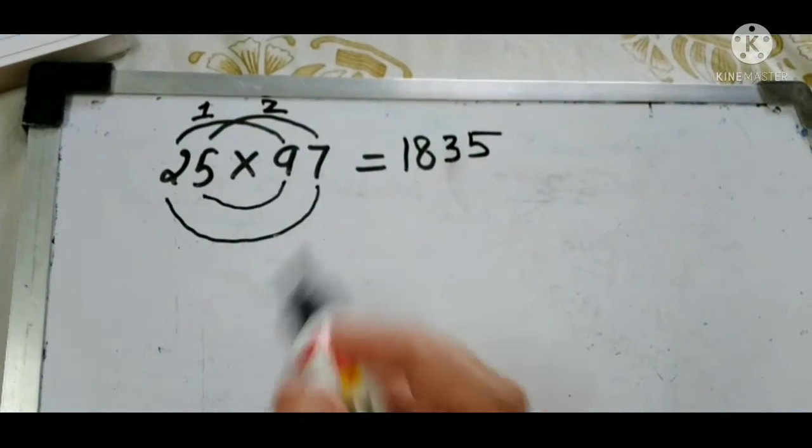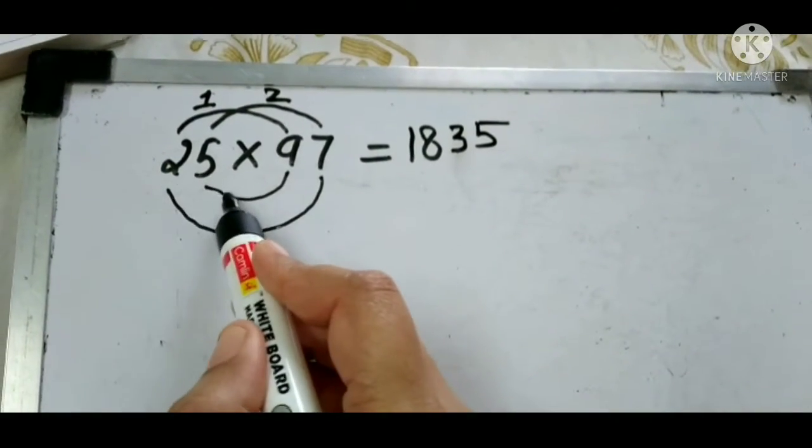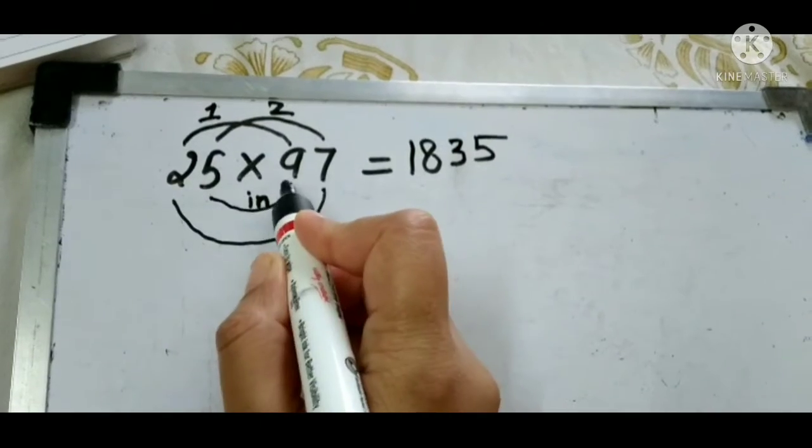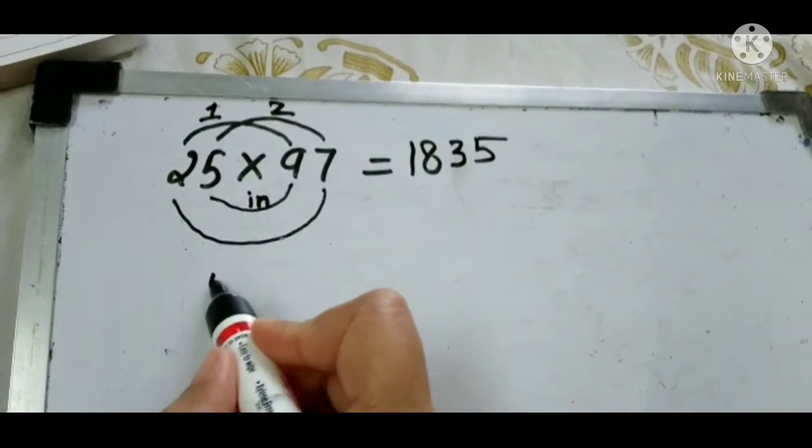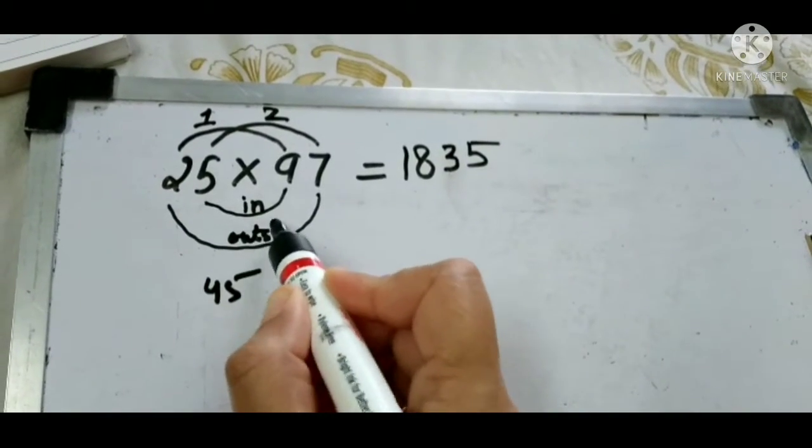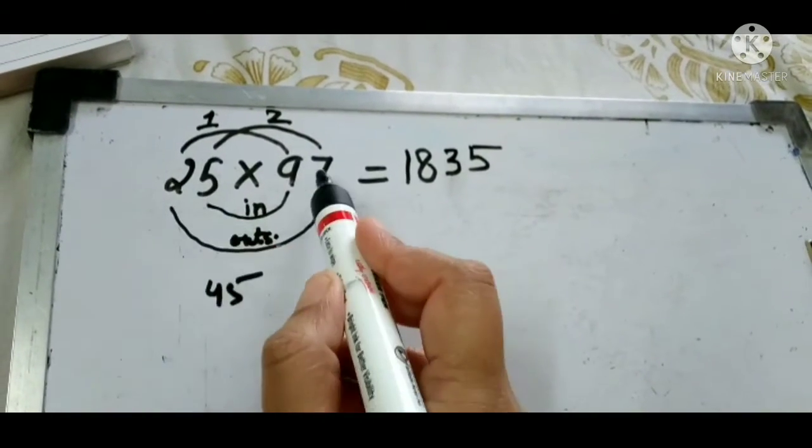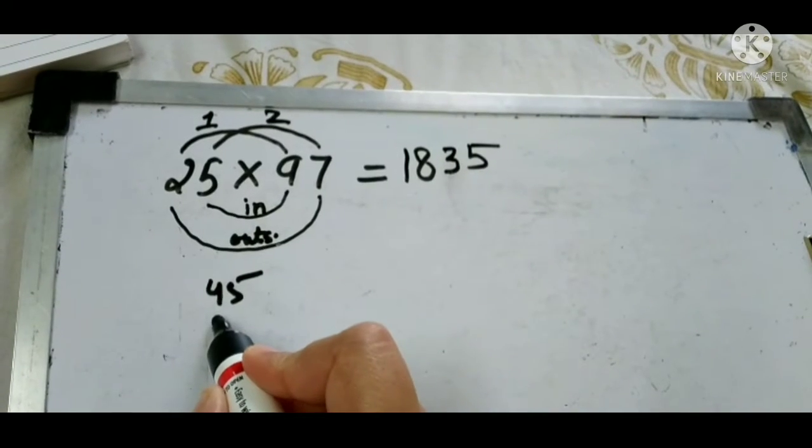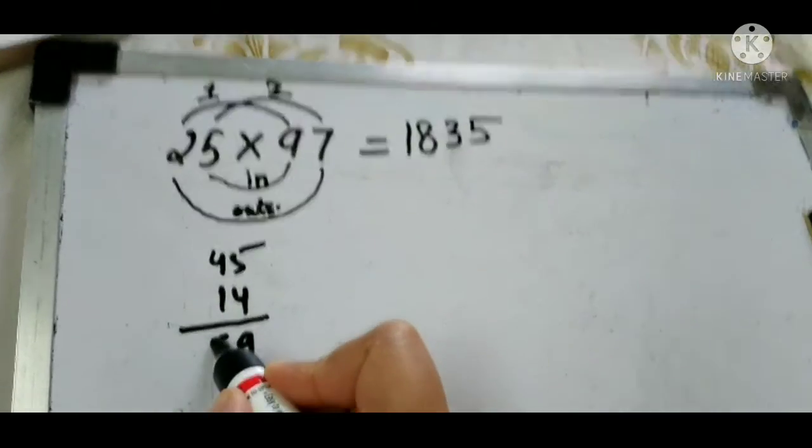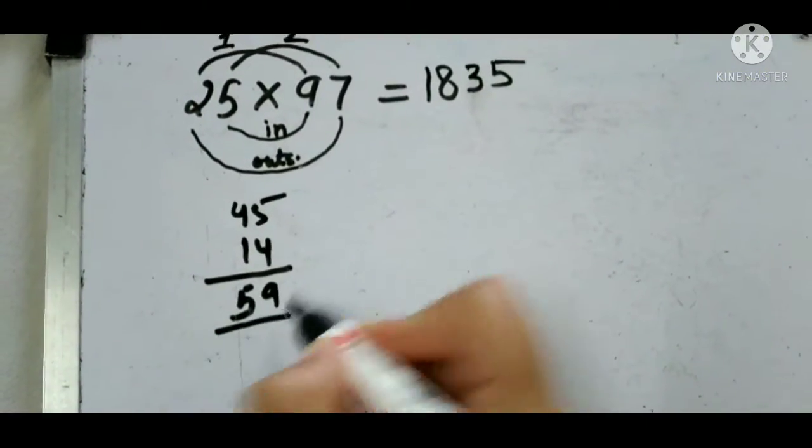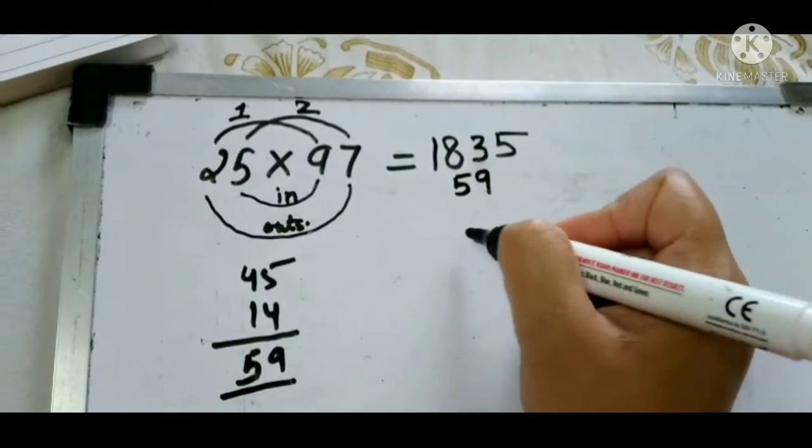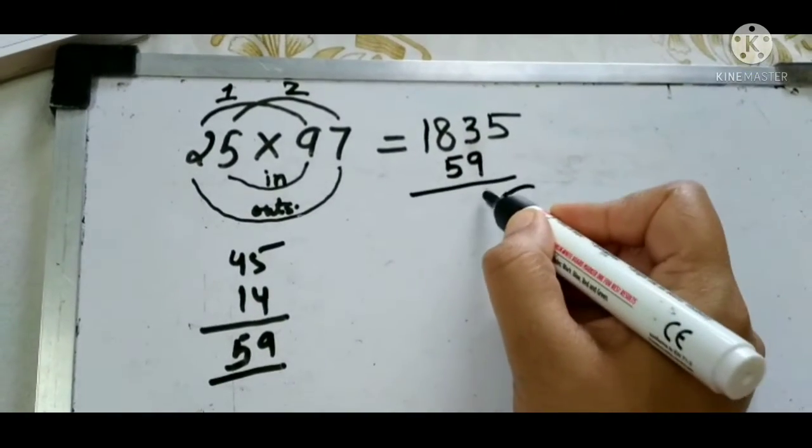Okay, and then what we do: inside, inside, these are in, so we write here 45. And then outsider, what is the outsider? 97 and 14, we write here. Then we add it together, 59. We add this 59 here in the middle, and now you will get your answer.